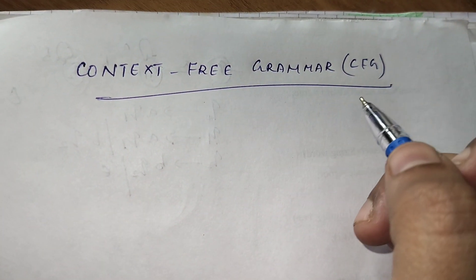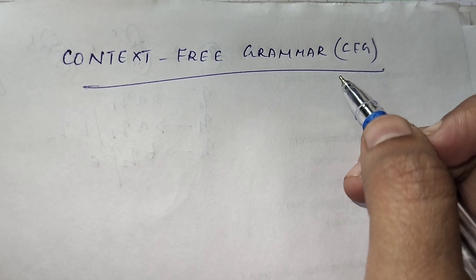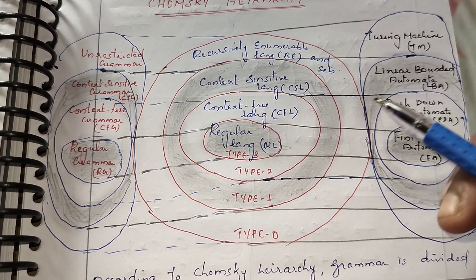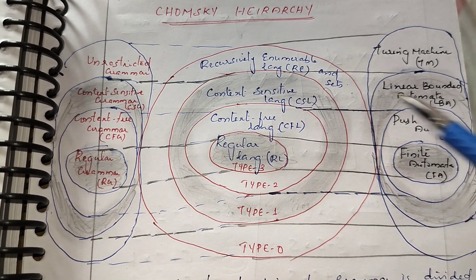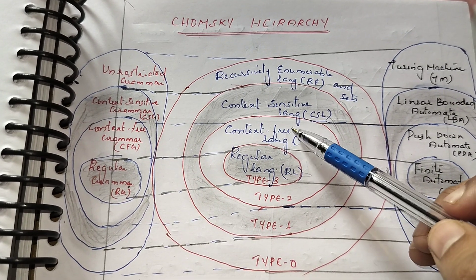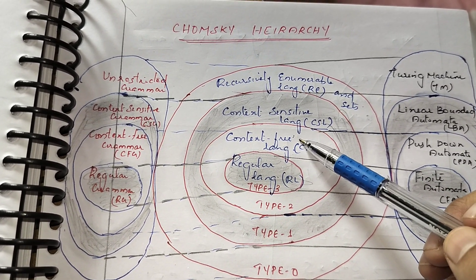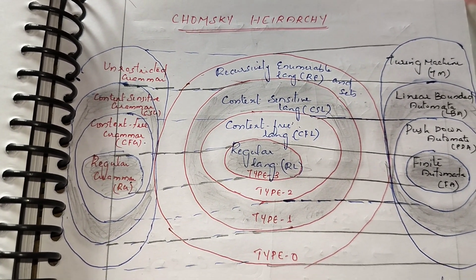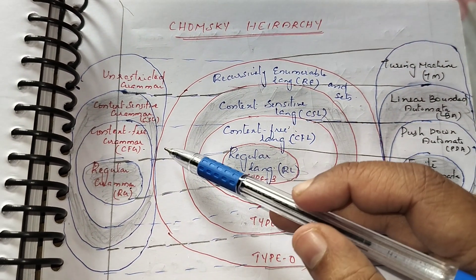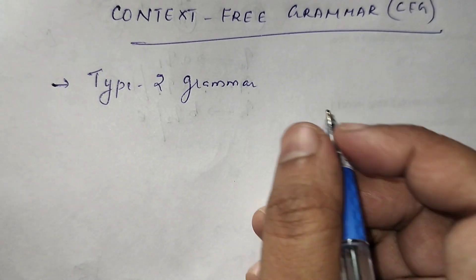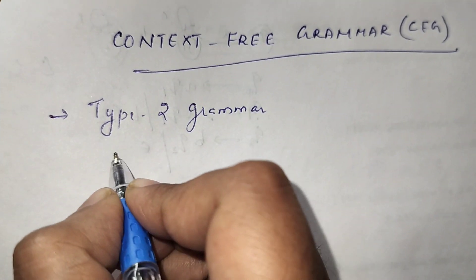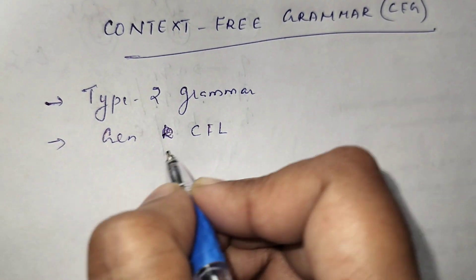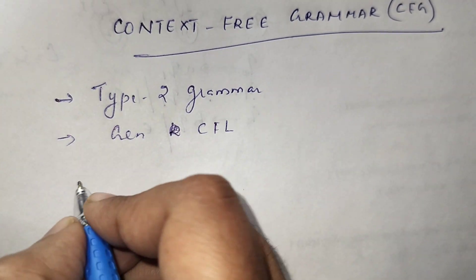The topic is context-free grammar in the Chomsky hierarchy. We saw that this is a type 2 grammar. Regular languages correspond to regular grammar with finite automata. Type 2 grammar — context-free languages — are generated by context-free grammar, and the corresponding machine is pushdown automata. So context-free grammar is a type 2 grammar and generates context-free languages, accepted by pushdown automata.